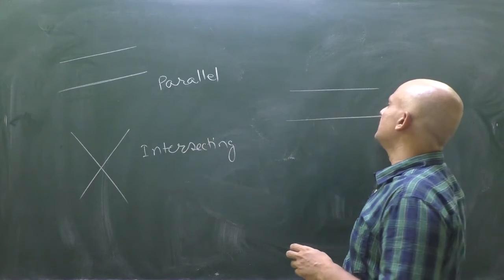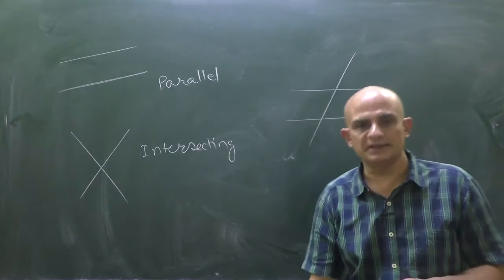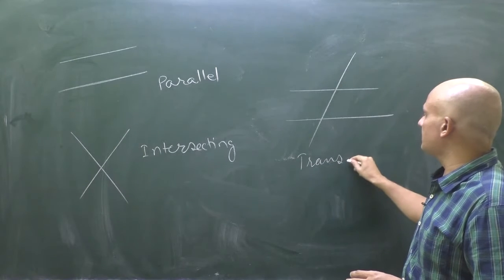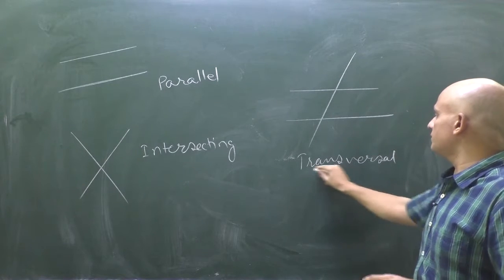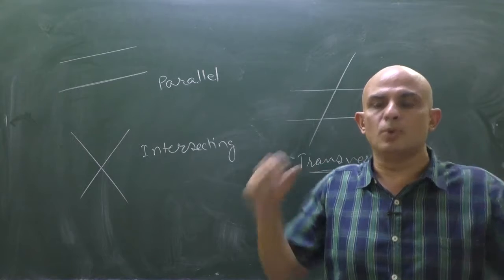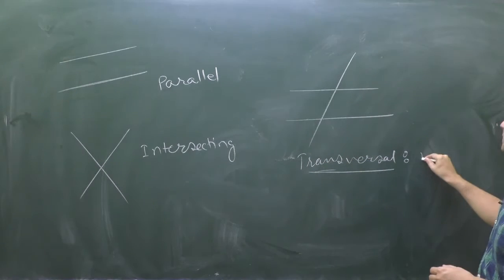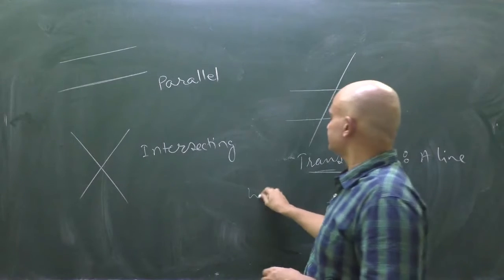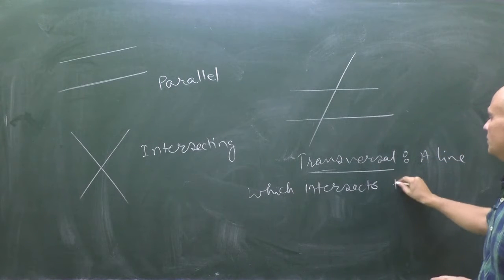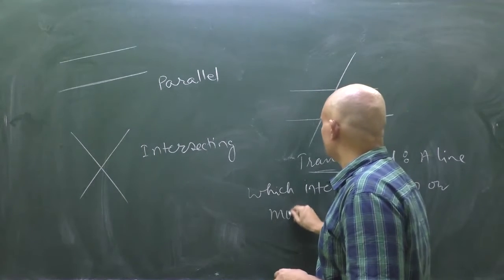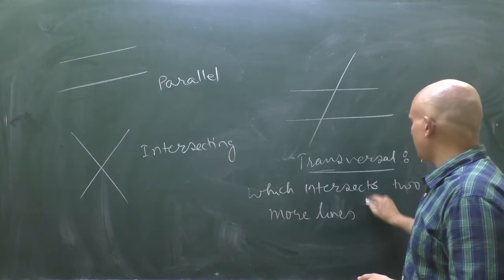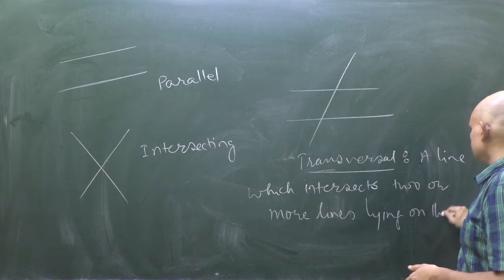Now, when two parallel lines are intersected by another line like this, that line is called a transversal line. The definition of a transversal line is: a line which intersects two or more lines.